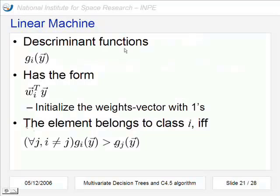What is linear machine? Linear machine is a set of discriminant functions. Here are them. And has this form. We perform a sum with this weight vector and this attributes vector. At the first time we can initialize this vector just with ones.